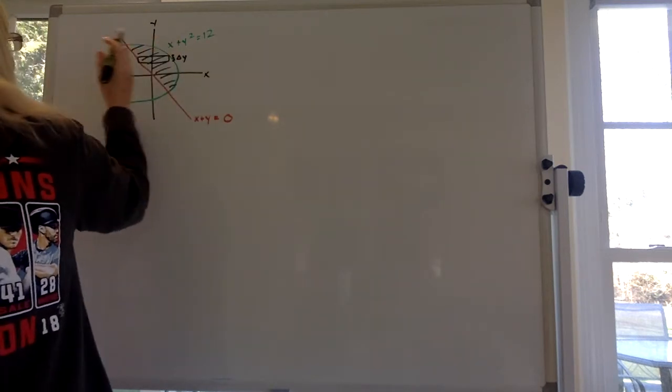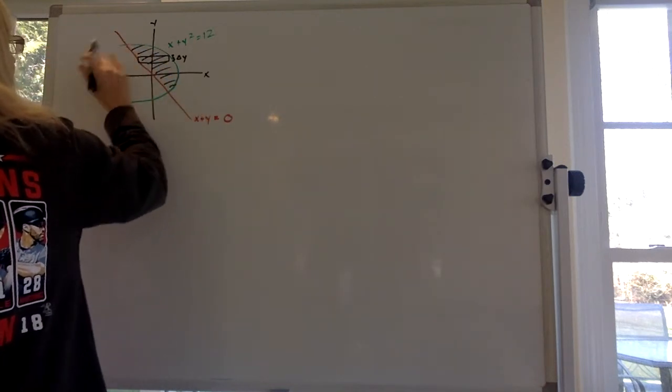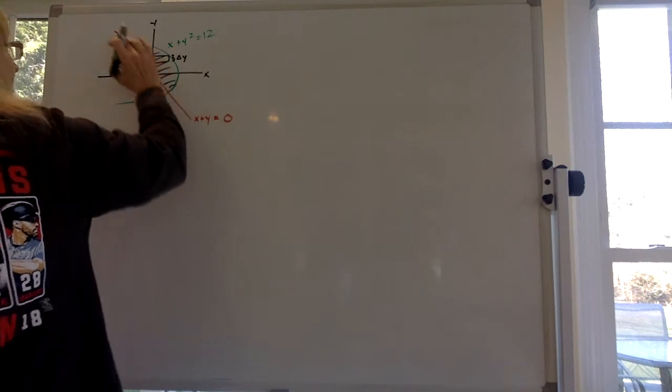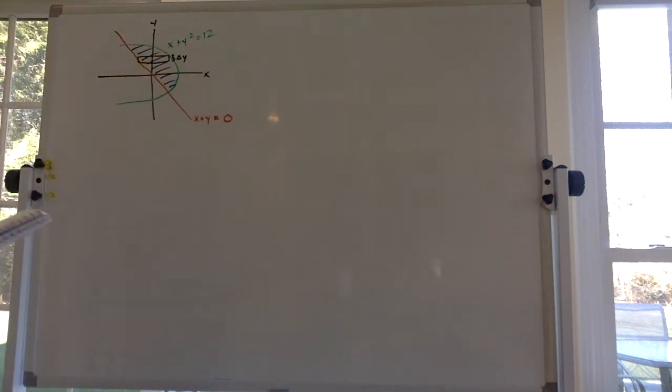So if you find the area to the left of that parabola minus the area to the left of that line for some particular y's, you're gonna find the blue area. So I'm gonna try it that way. So I'm gonna do left to right.